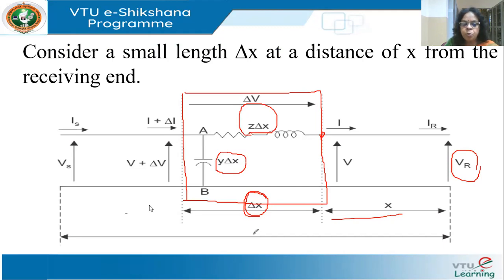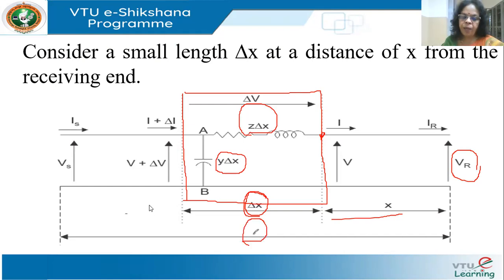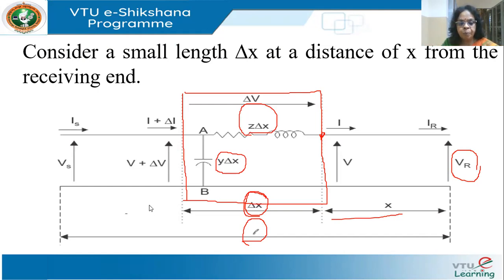Because of the distributed capacitance, the current at the input will be different from the current at the output — I call it I plus delta I. Let L be the total length of the line. I have receiving end voltage VR and sending end voltage VS. I take a distance X from the receiving end, with voltage V and current I there. V plus delta V is the voltage on the input side and I plus delta I is the current at the input of the section under consideration.